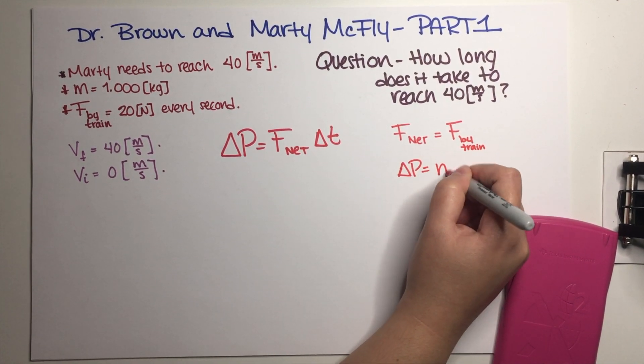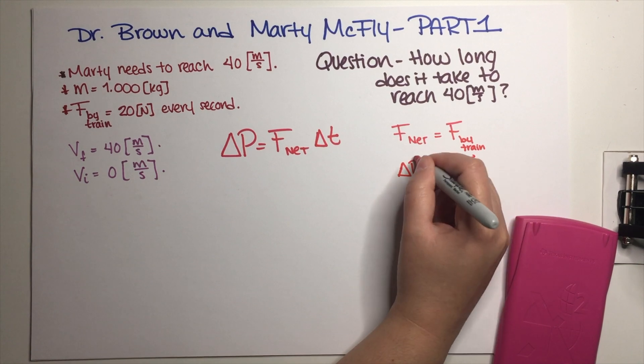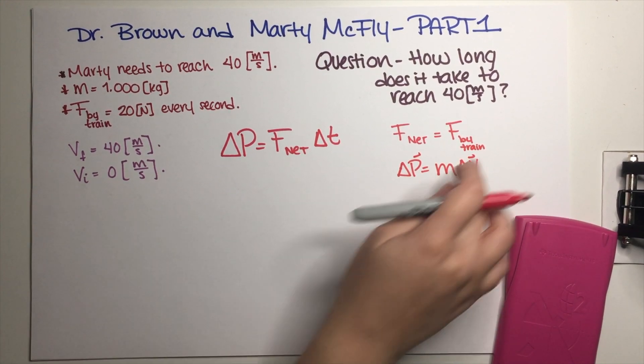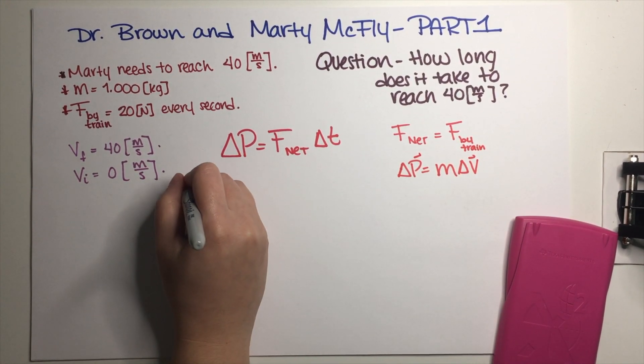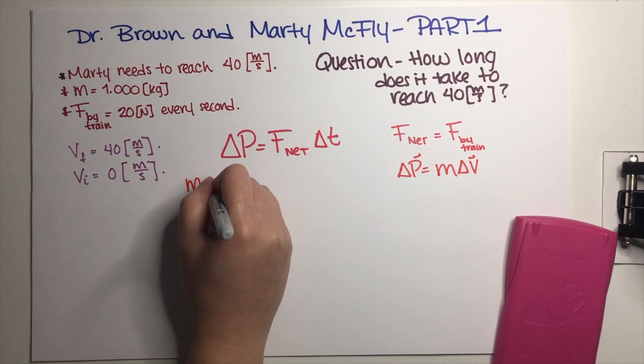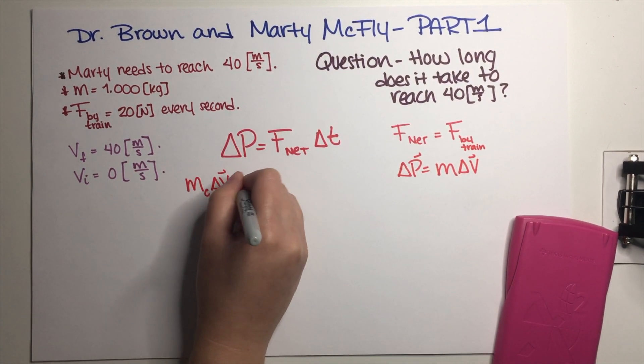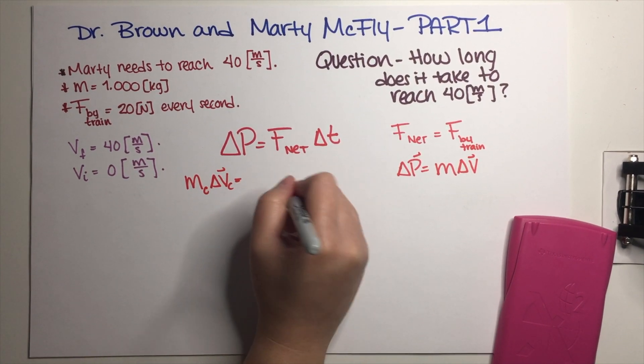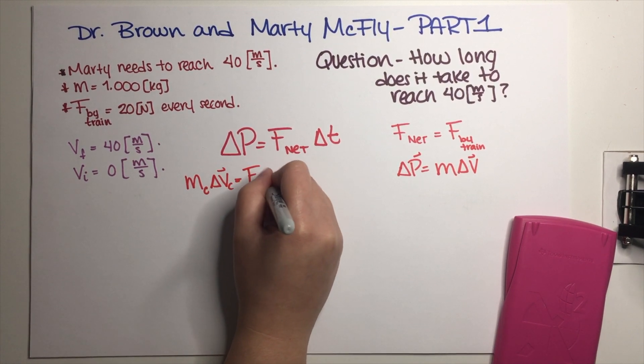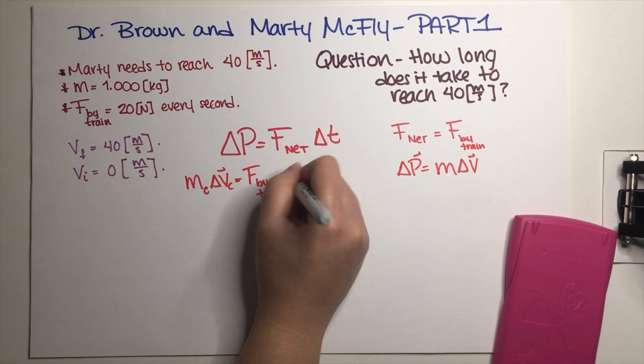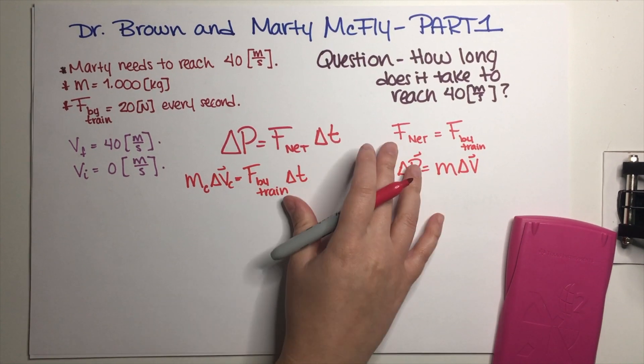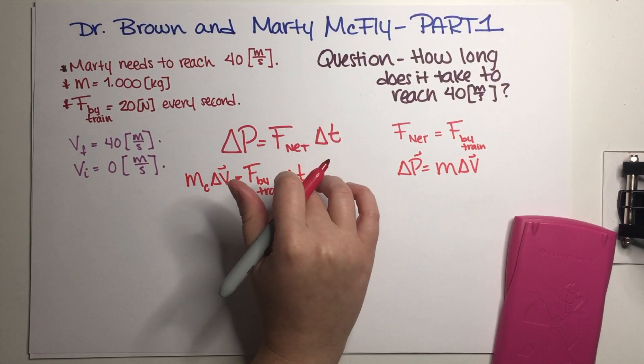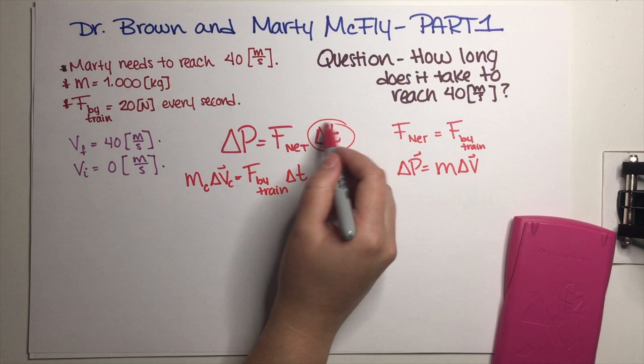I'm just going to go ahead and substitute here. This is the mass of the car times Δv of the car times the net force that the car is feeling, so just force by train. And this is Δt. As you might be able to tell right now, this Δt is actually what we're looking for.